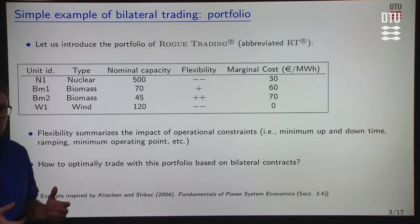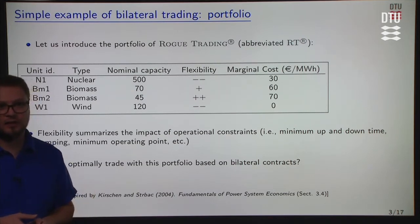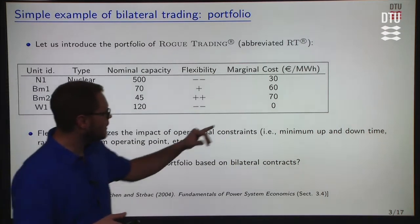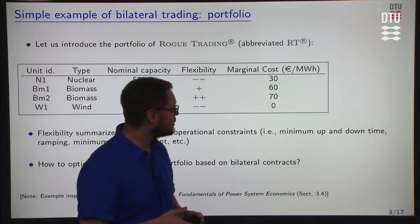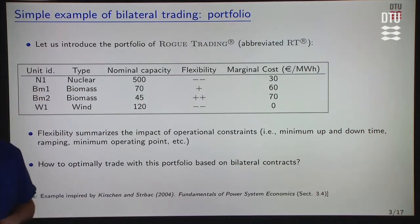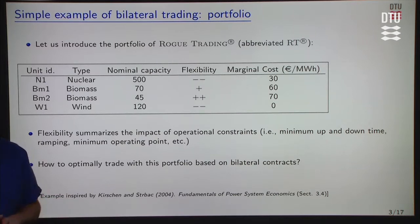In terms of marginal cost — how much does it cost to produce the next unit of energy for each asset — the nuclear power station has a marginal cost of 30 euro per megawatt hour. The two biomass units have marginal costs of 60 and 70 euro per megawatt hour. And finally, for the wind, the marginal cost is 0 euro per megawatt hour, since it is free to get energy from the wind.